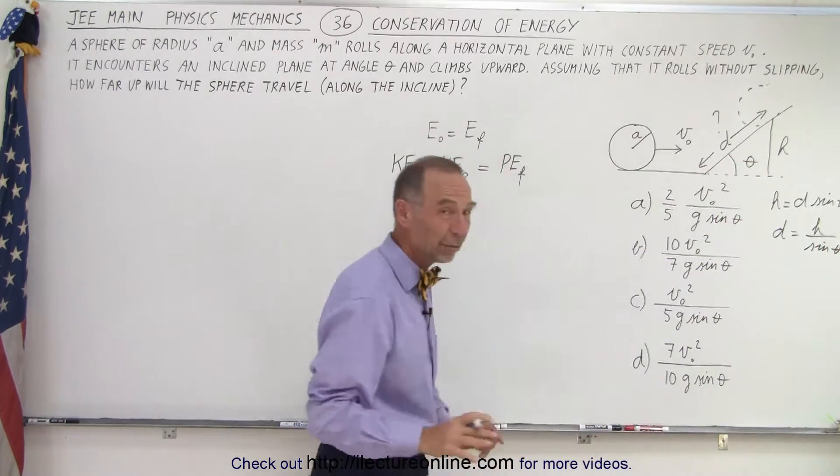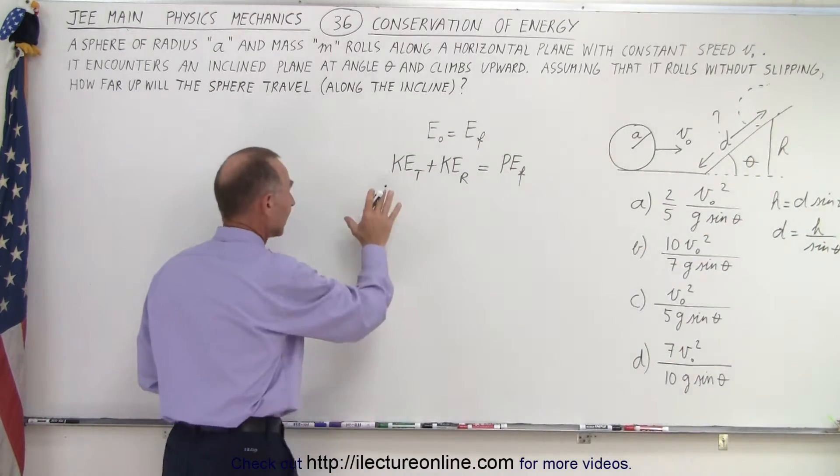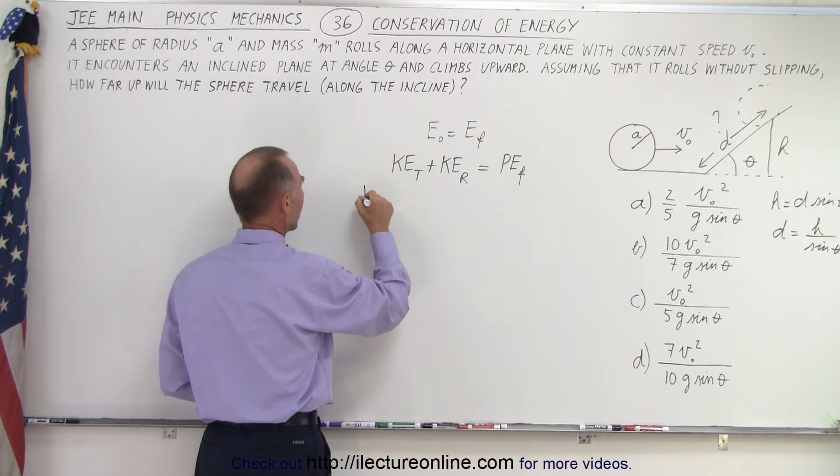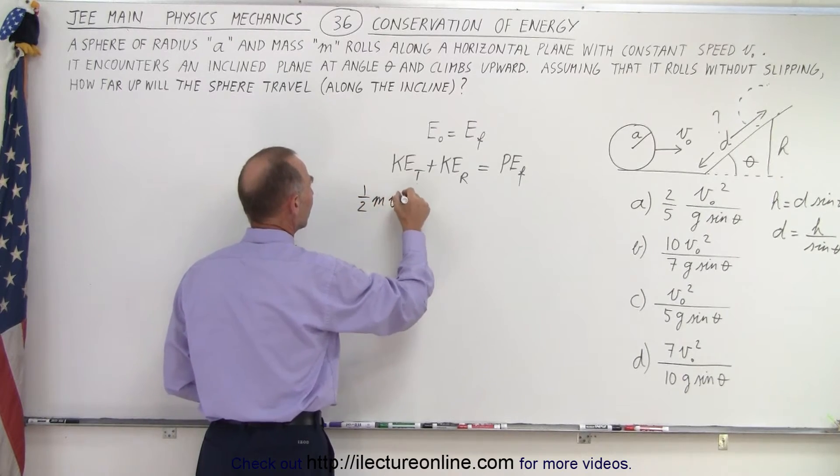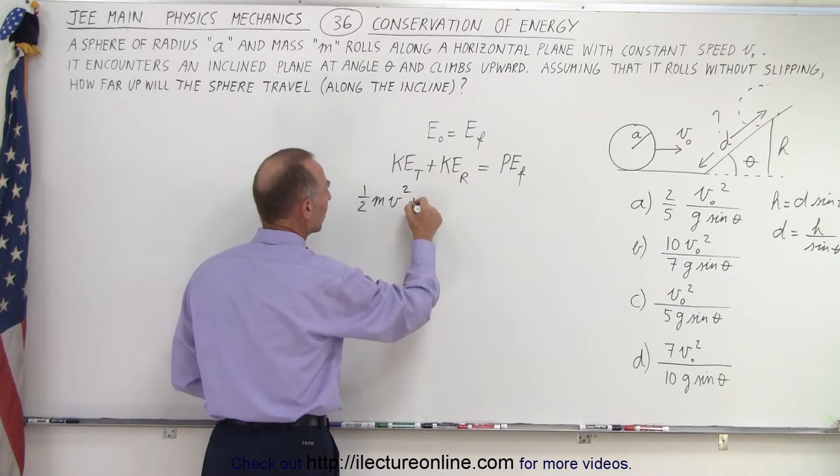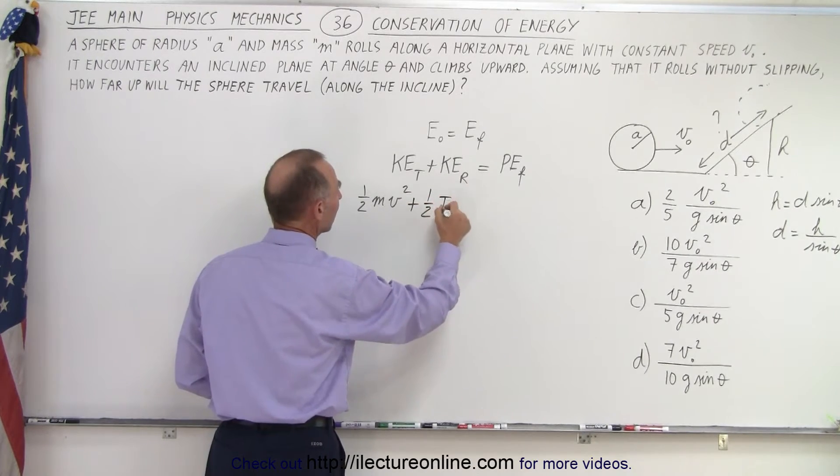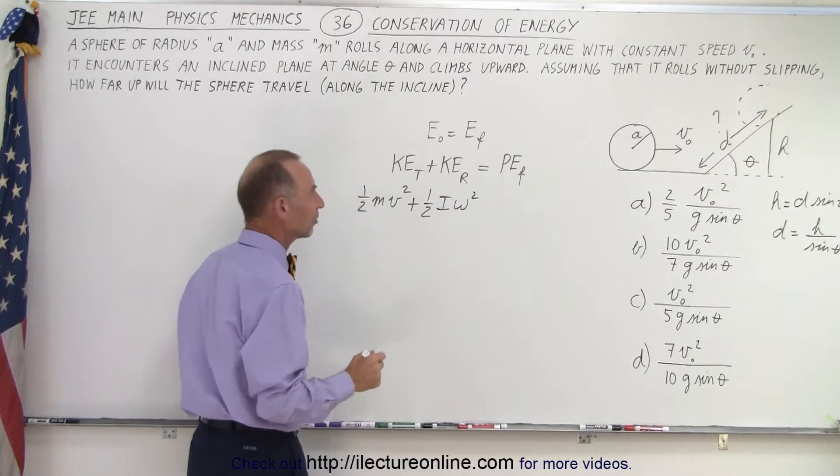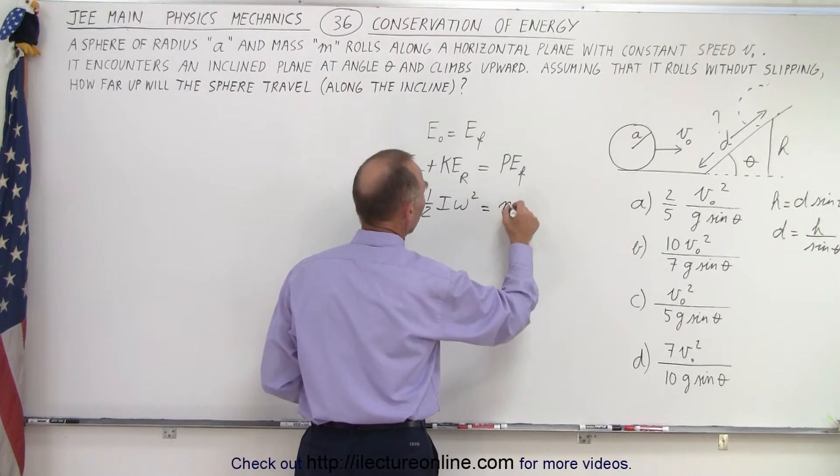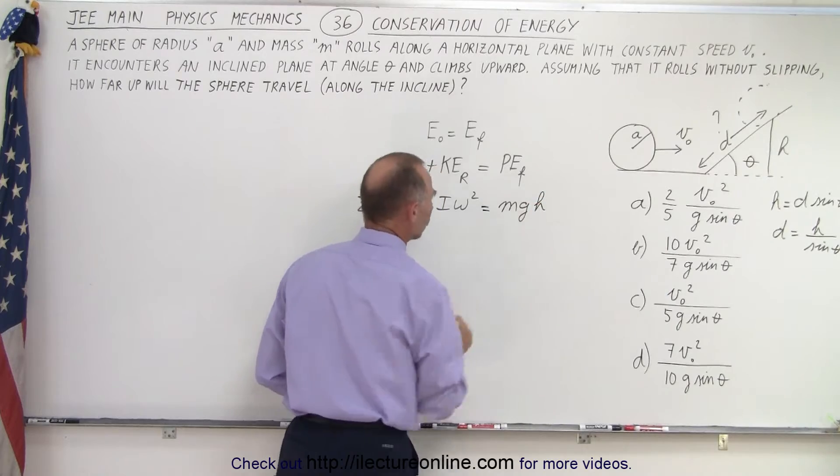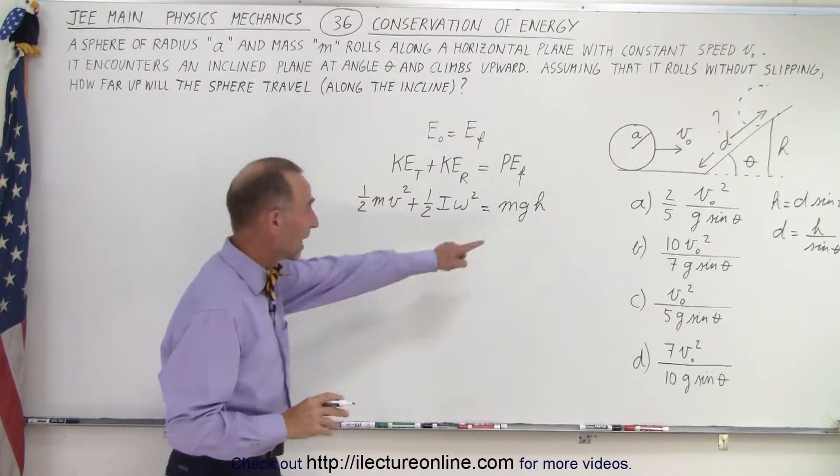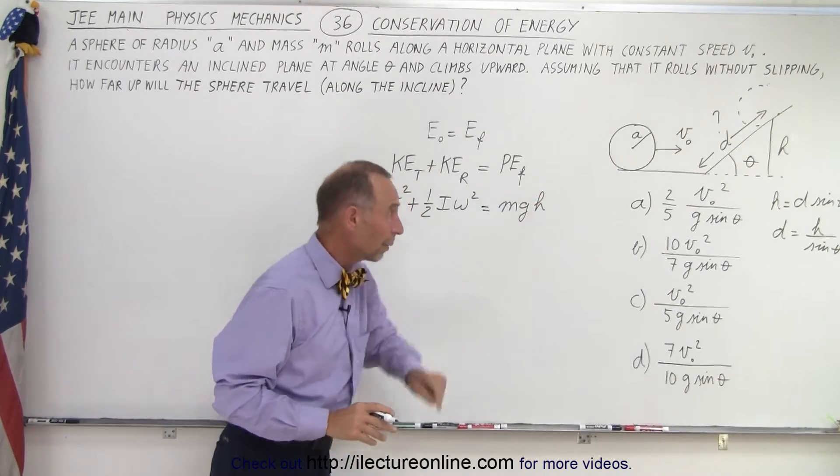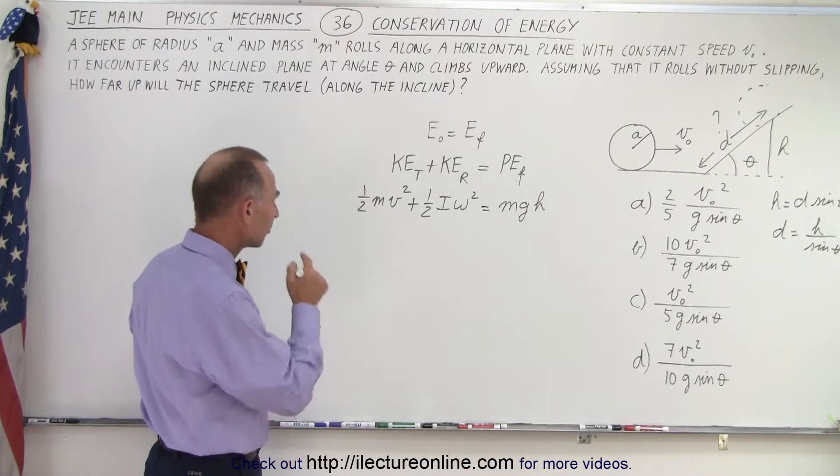All right. So now let's plug in what we know. Kinetic energy translational would be 1/2 mv squared. Kinetic energy rotational would be 1/2 I omega squared, the moment of inertia times the angular velocity squared, and that will equal mgh. Now of course we want to change the h to a d, according to what we have over there.